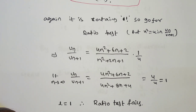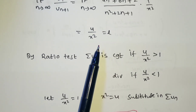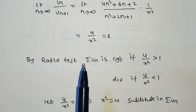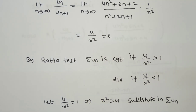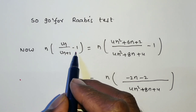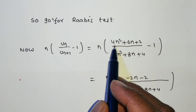Check whether the limit expression contains e. Here L = 4/x², which does not contain e, so we do not go for the logarithmic test. Since it does not contain e, we go for Raabe's test. In Raabe's test we need to find the limit as n tends to infinity of n times (u_n/u_{n+1} − 1).